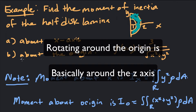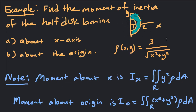And then about the origin — how easy or how hard is it to get this thing rotating around the origin? Let's look at our definitions of the moments of inertia about the x-axis and the moment of inertia about the origin. The density is given here as 3 over the square root of x² + y².